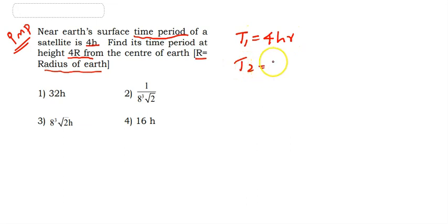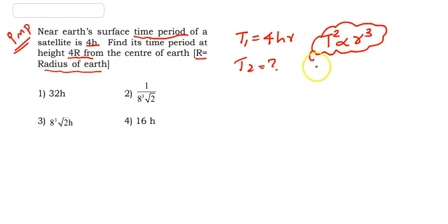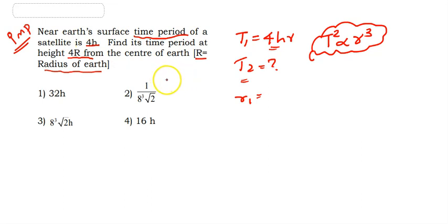We use Kepler's third law: T² is proportional to R³. So T1²/T2² = R1³/R2³. R1 is R (near surface), and R2 is 4R (given as 4R from center of Earth).